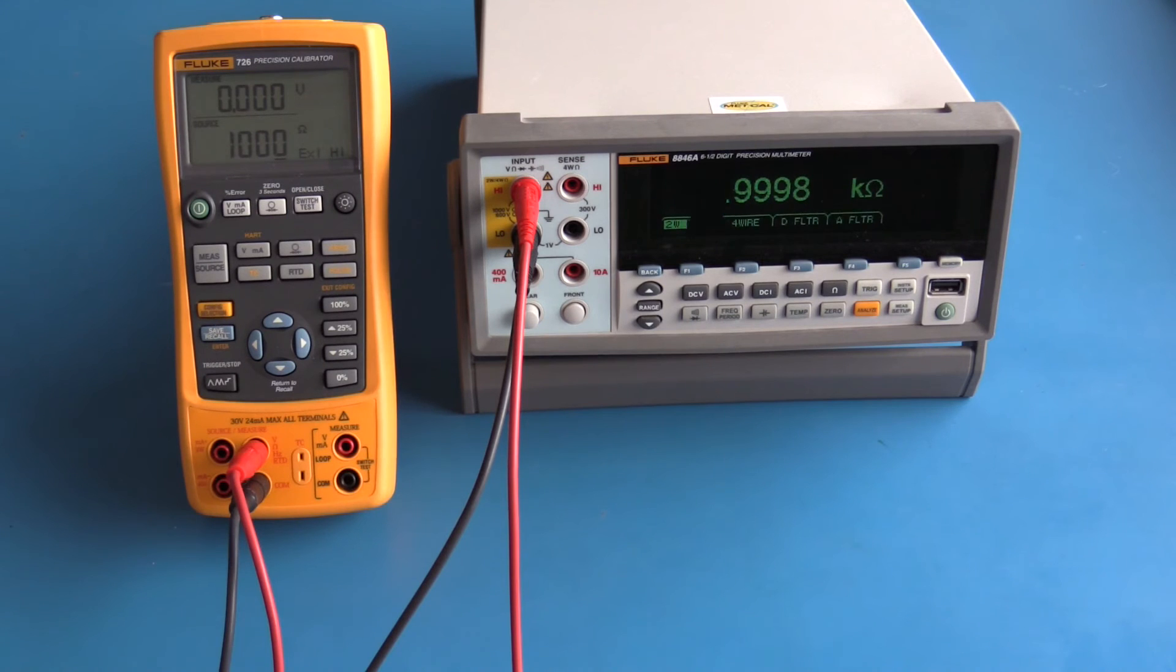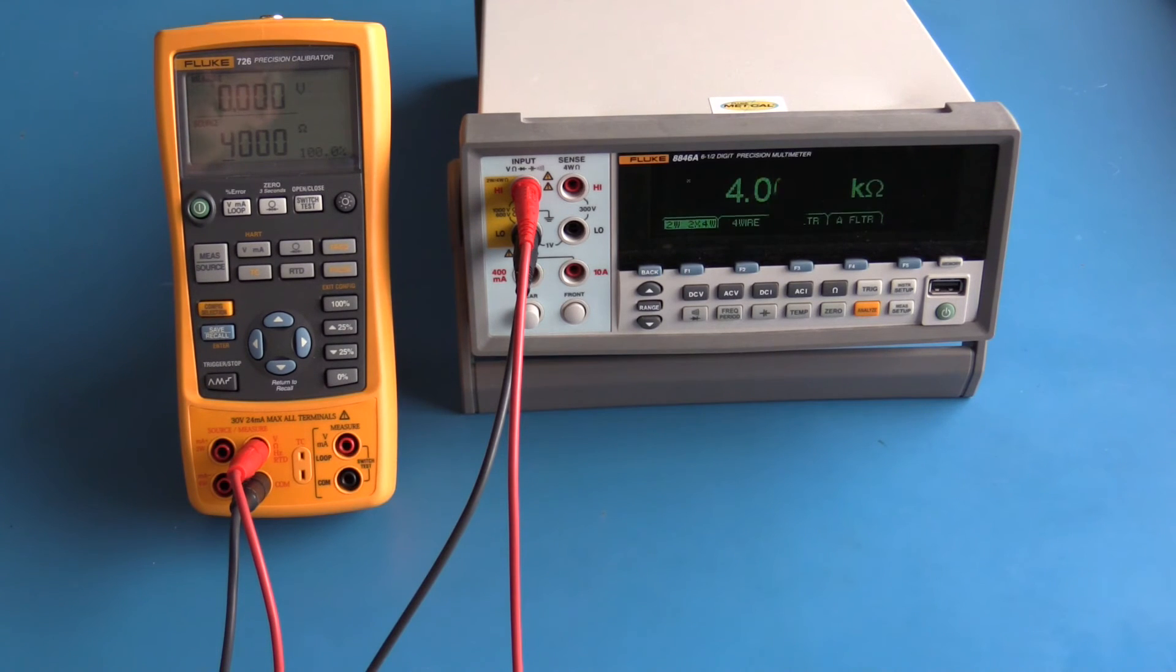The Fluke 726 Precision Calibrator can also simulate resistance. Here I've set it up to simulate a thousand ohms and we're reading approximately 1k on the 8846a. And this is approximately 4k, which is the top of the range.